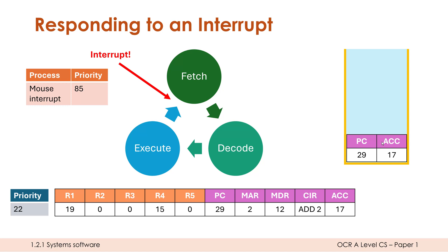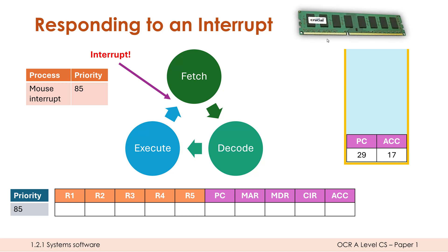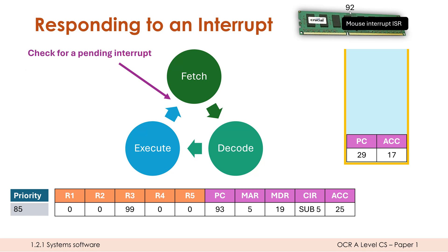Now we need to switch to executing the ISR. We look in RAM to find the relevant ISR — just a program which handles whatever is occurring. Let's say this ISR starts at memory location 92. We change the program counter to point towards this ISR, so the PC is now set to 92 and we begin executing it. At the end of each FDE cycle we still check for interrupts, but so far none are occurring, so we keep going through.